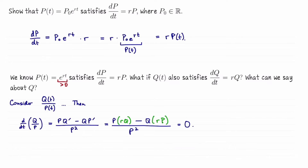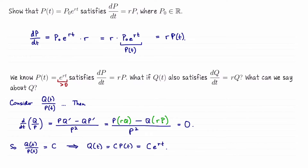When you differentiate something and get zero, that means what you differentiated is a constant. So the ratio q over p is constant — let's set that equal to some constant c. That means q of t equals c times p of t, which equals c times e to the rt. So q has the same exponential form, meaning there's no other kind of function we need to go looking for to satisfy this differential equation.